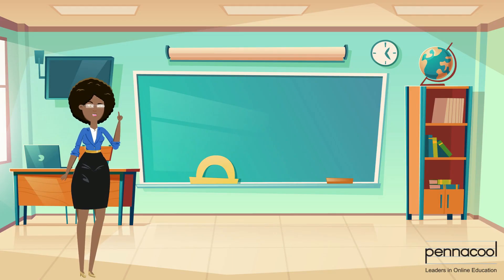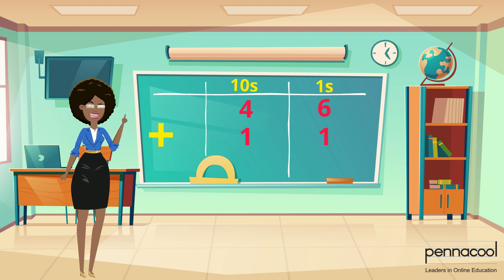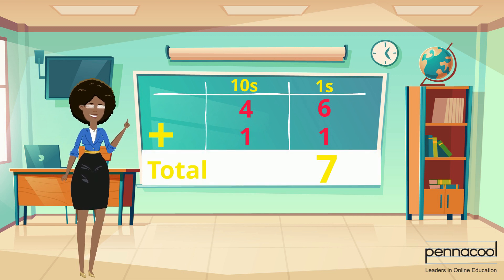Let's do some examples. 46 added to 11 is equal to what? First, let's set up our place value chart. Then, let's add our ones column values. That's 6 plus 1, which gives us 7. So we put 7 in our total space in the ones column.